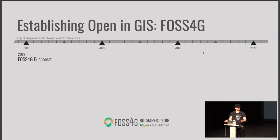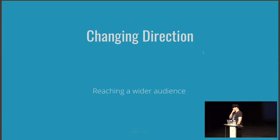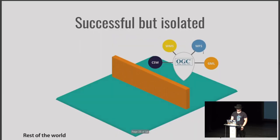I'd like to switch gears. This has been a bit of history about how we got here. It's important to note that a lot of the standards helped create a space for our open source projects to thrive. I'd like to talk about what's happening in our industry right now. Our OGC standards have been successful, but they've been a little bit isolated from the rest of IT. The rest of IT has enjoyed far greater uptake of open source technologies, and we would like to see the same level of success.